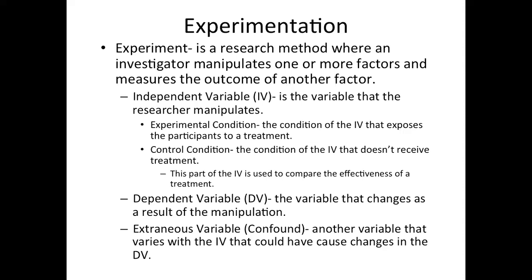With an experiment, you have to be able to manipulate a variable. The variable that we manipulate is called the independent variable. In order to be a variable, it has to have the potential to have two or more levels or conditions. The basic experiment has, at a minimum, an experimental group or condition and a control group or condition.